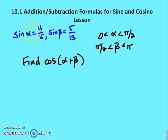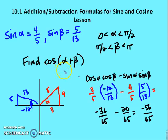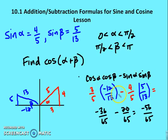Given sine α = 4/5 and sine β = 5/13, find cosine(α + β), where α is between 0 and π/2, and β is between π/2 and π. Alpha is in the first quadrant, so cosine α = 3/5. Beta is in the second quadrant, so cosine β = −12/13. Using the formula: cosine(α + β) = cosα·cosβ − sinα·sinβ = (3/5)(−12/13) − (4/5)(5/13) = −36/65 − 20/65 = −56/65.